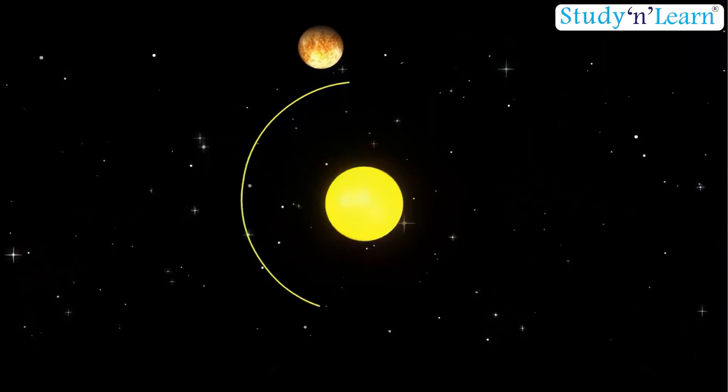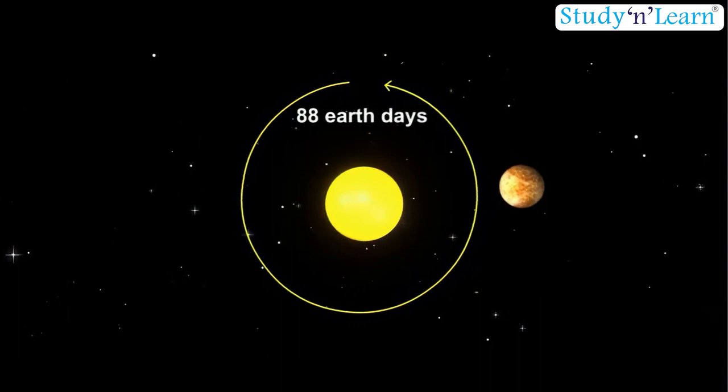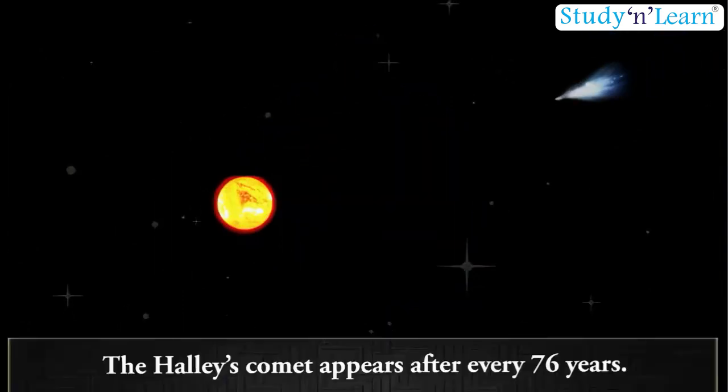On the other hand, the orbital period of the planet Mercury is 88 Earth days. The Halley's Comet appears after every 76 years.